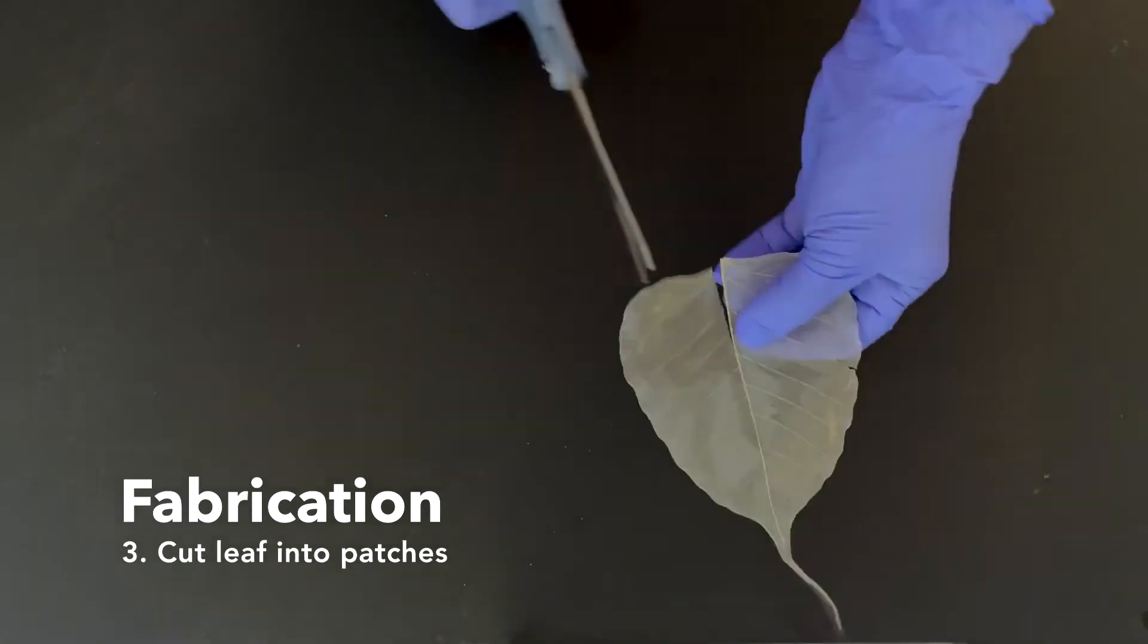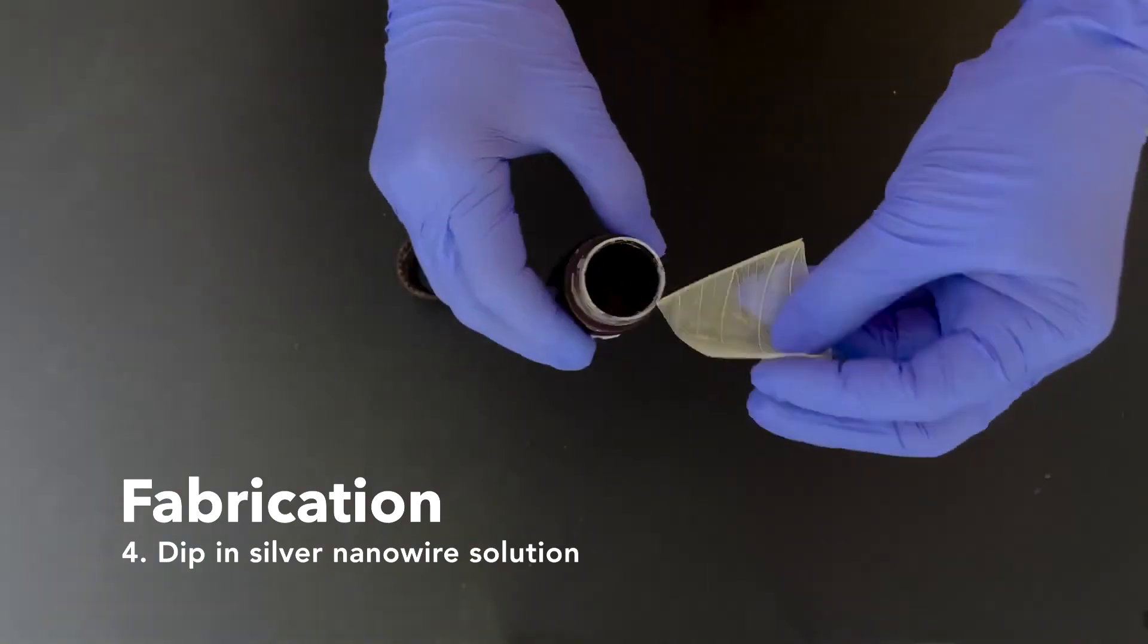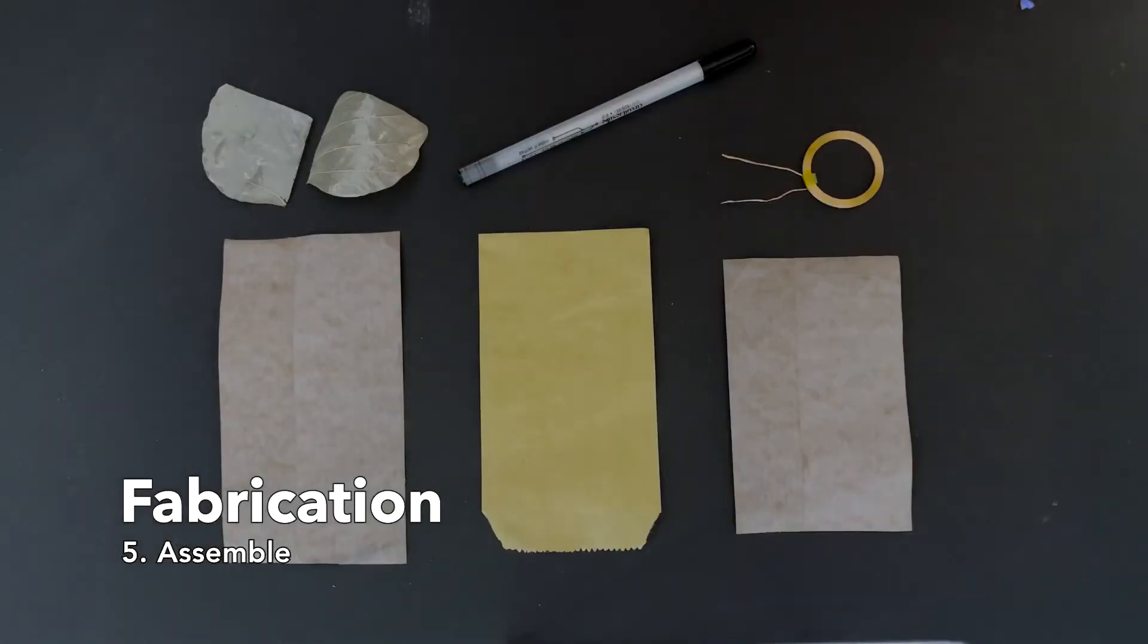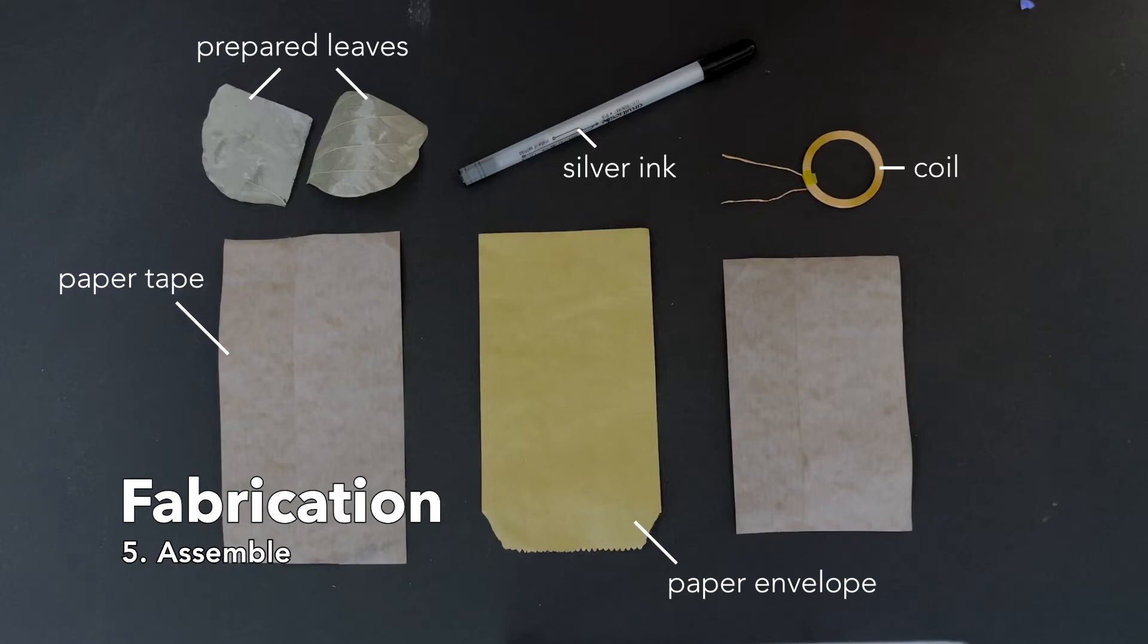Next, we cut the leaf skeleton into small patches and dip it into a silver nanowire solution. To assemble the packaging, we gather two leaf heaters, a paper snack-sized envelope, two pieces of paper tape with a natural rubber adhesive, water-based non-toxic silver ink, and a coil of copper wire, which, for prototyping simplicity, we use here as a proxy for a silver ink or nanowire coil that could be printed directly onto the paper envelope with an inkjet printer.